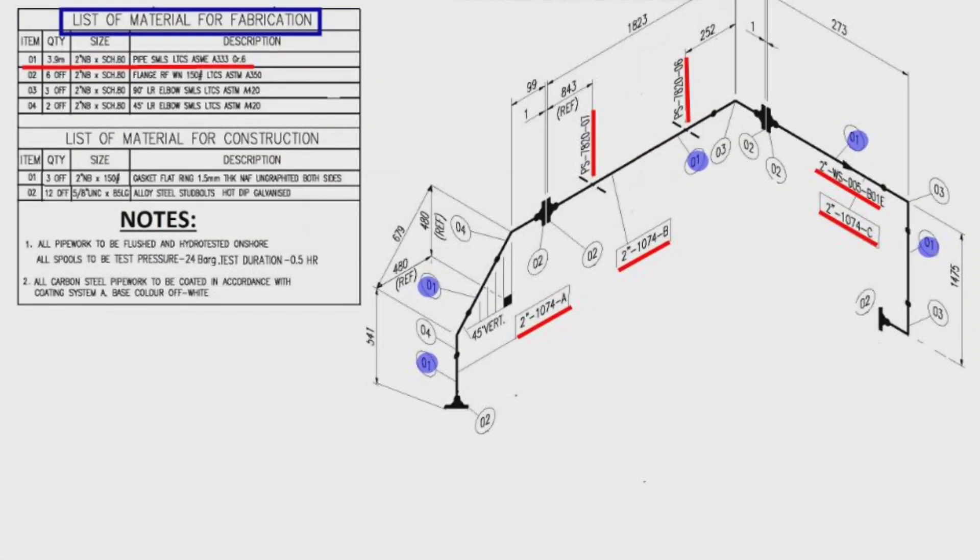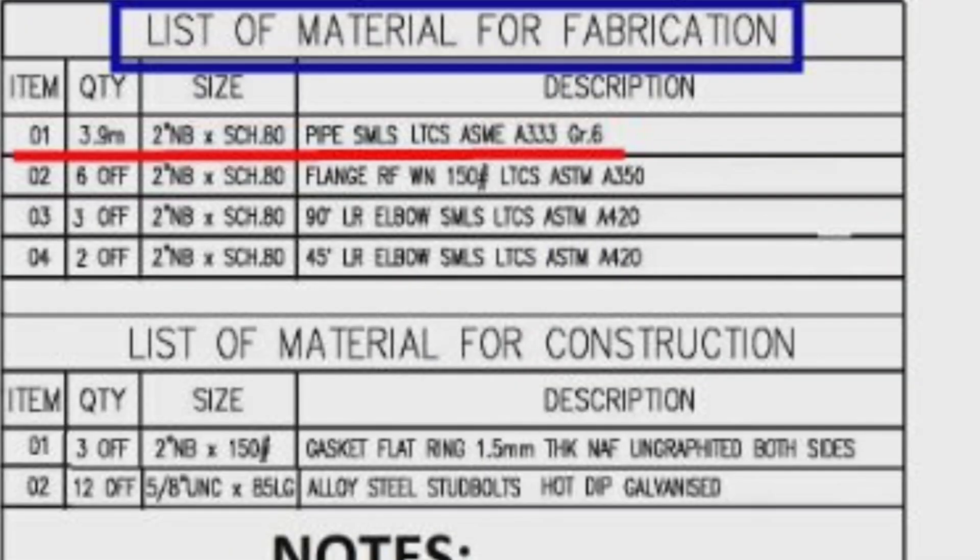Detail number 2 was used in six places in the pipe drawing. The item number 2, the quantity total is 6 pieces, size is 2 inches, wall thickness is schedule 80, flange, raised face, weld neck, seamless type, low temperature carbon steel material, ASTM A420.